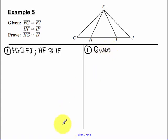Now mark up your diagram. So FG is congruent to FJ. HF is congruent to IF. And I'm going to need to prove HG congruent to IJ. So that's where we're going. My guess is we're going to have to prove our two side triangles congruent.